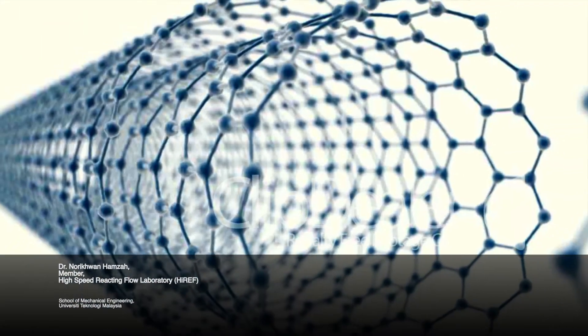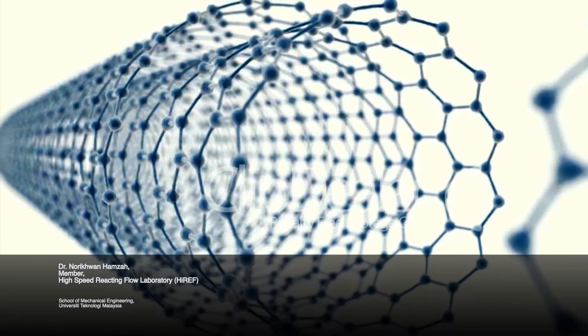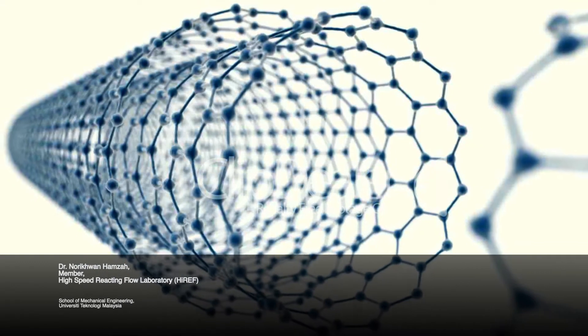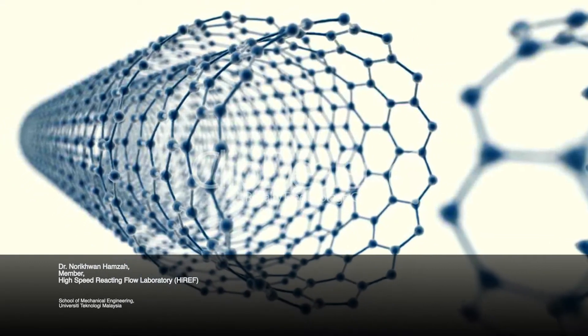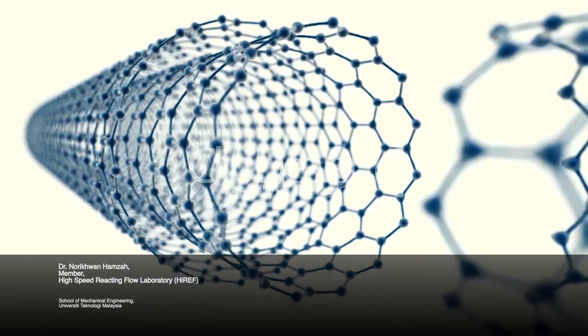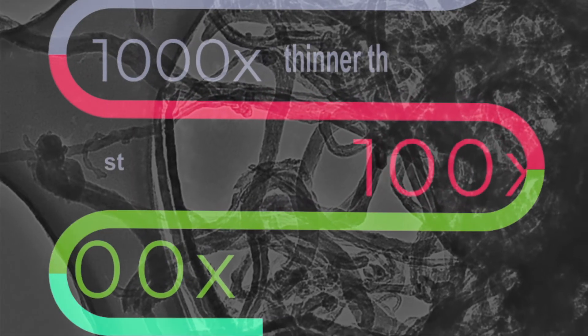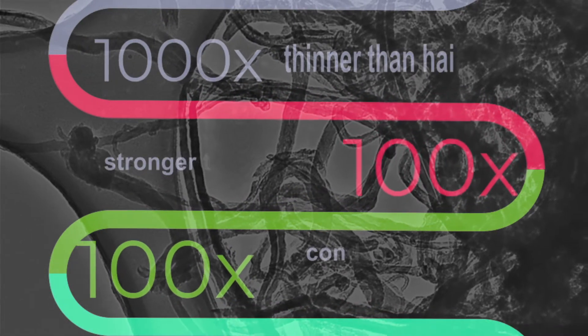Multi-wall carbon nanotubes is a nanomaterial with turbulent structure, consisting of multi-layer walls made of carbon. It is 1000 times thinner than our hair, but it has remarkable properties.